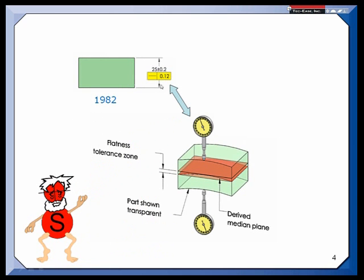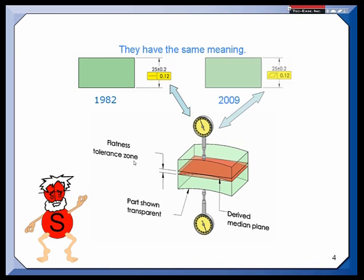We use Rufus to explain former concepts. The former concept he'd like to show you today is when I put straightness on a size dimension controlling a width. Back in 1982, this meant that your tolerance zone was a pair of parallel planes. They took the principle of applying it to a cylinder and extended it to widths. Well, that tolerance zone really looks like a flatness tolerance zone, so some people kept asking, why don't you really call it flatness?